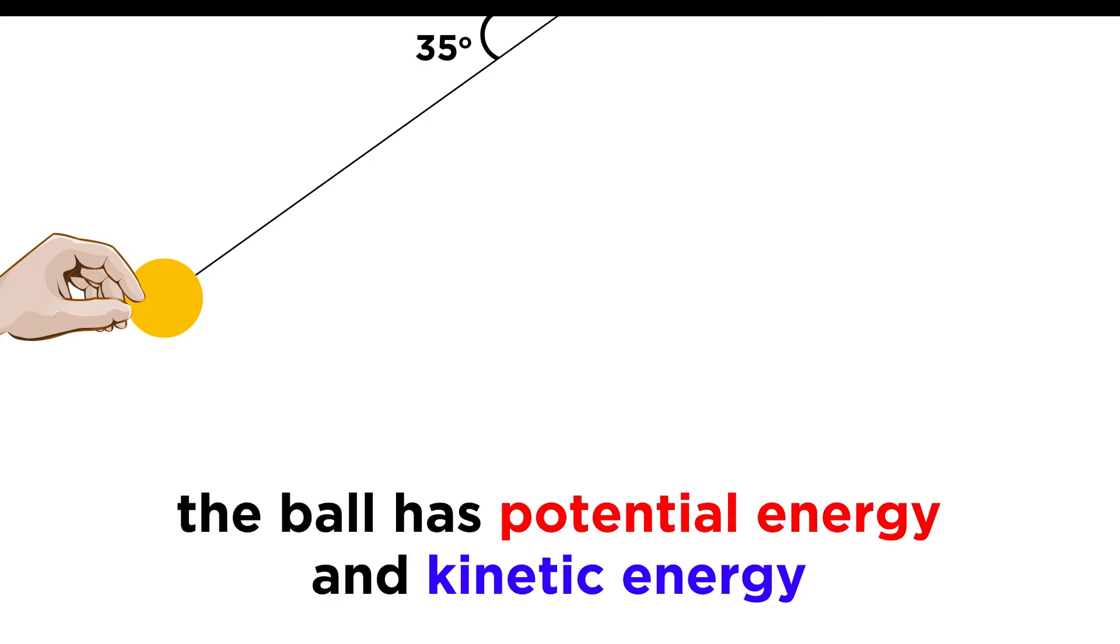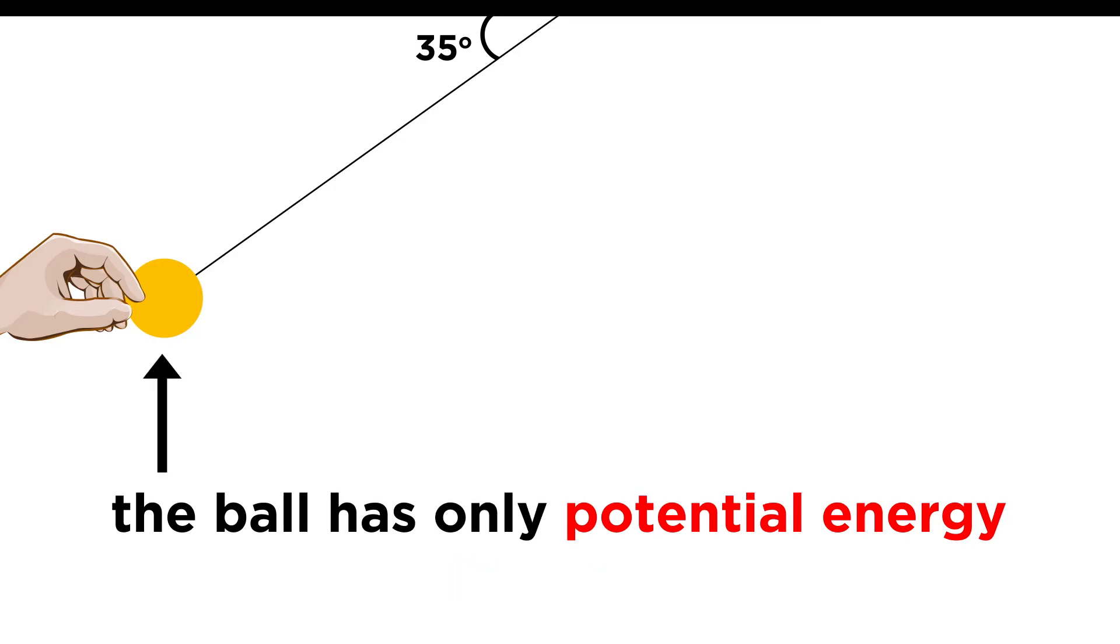Just as with an object in freefall, this pendulum will always have some amount of potential energy and some amount of kinetic energy. Just before releasing, it has only potential energy, as kinetic energy is the energy of motion, and it isn't moving.